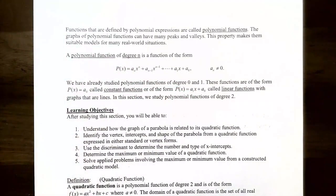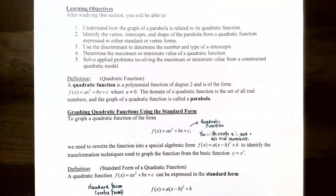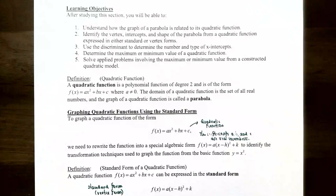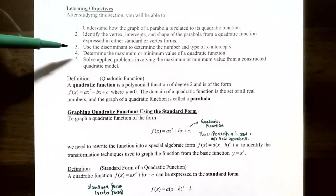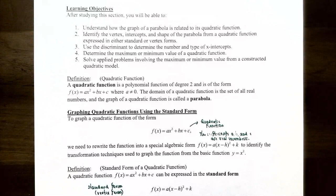Linear and constant functions have straight-line graphs. In this section we're going to study polynomial functions of degree 2, called quadratic functions, whose graph is called a parabola — a u-shaped graph. We'll identify the vertex, x-intercepts, y-intercept, and shape of the parabola, use the discriminant to determine the number of x-intercepts, and find maximum and minimum values.